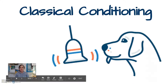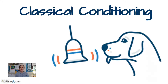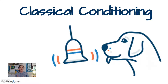Hey guys, so in this video I'm going to explain classical conditioning. It's just a portion of the learning unit, and classical conditioning is a specific type of learning where a human or an animal learns to do a reflexive response — something involuntary — and they learn to do that involuntary behavior to something completely neutral.